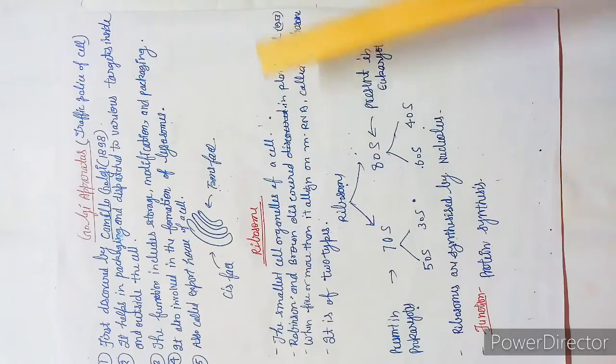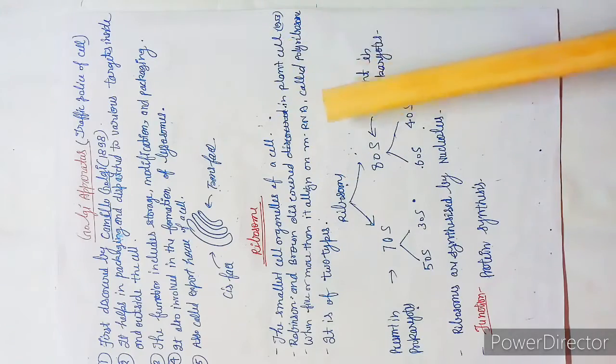When five or more ribosomes align on mRNA, they form the polyribosome. So one thing that must come to your mind is what is polyribosome?